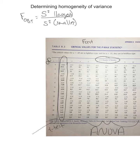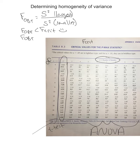As long as your F-obtained is less than your F-crit, you can proceed — you have met the homogeneity of variance assumption. But if your F-obtained is greater than your F-crit, you cannot proceed. You have violated that homogeneity of variance assumption.